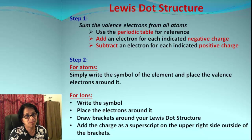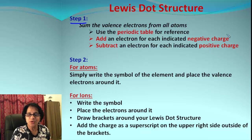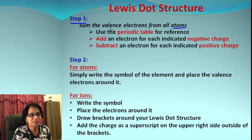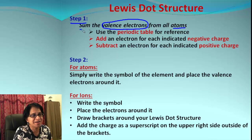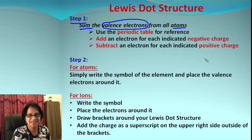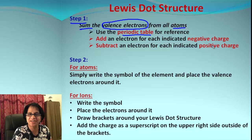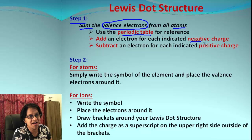How do we draw a Lewis dot structure? There are a couple of steps. Step number one: we identify the element or elements, and for each atom we find out the valence electrons. If there is more than one atom, we find out the total sum of the valence electrons. We use the periodic table for reference.